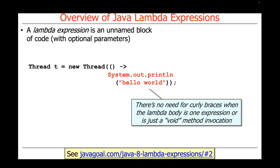There's no need for curly braces when the Lambda body is something simple like this — just a single expression or a void method invocation. We'll see later that when we have more than a single expression or statement, then you need to surround the Lambda Expression with curly braces. But for something as simple as this, we don't need to do that at all.